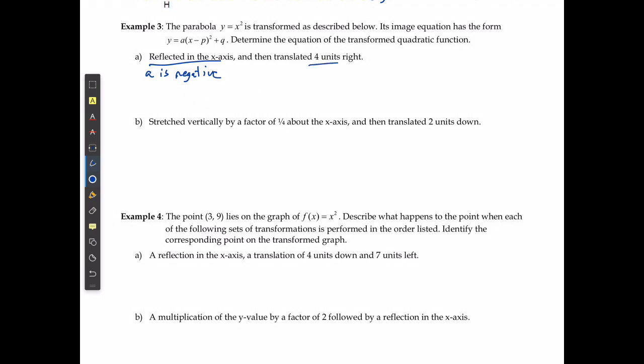Translated 4 units right means that p is going to equal positive 4. So I'm going to fill in the information that I know and state that y equals, a is negative. It doesn't say anything else about vertical stretch, so I'm just going to assume it's negative 1 and not write the 1 because it's redundant.